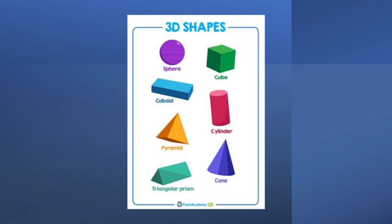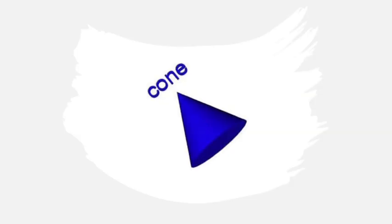What are the 3D shapes? Sphere, cube, cuboid, pyramid, cylinder, triangular prism and cone. See, children, here these all shapes are having length, breadth, height. So we call these three-dimensional shapes, or 3D shapes.